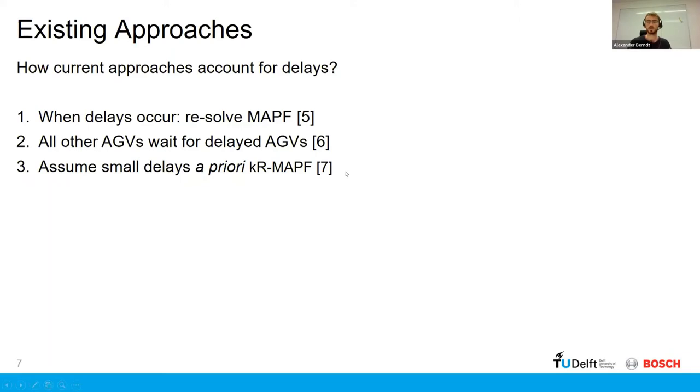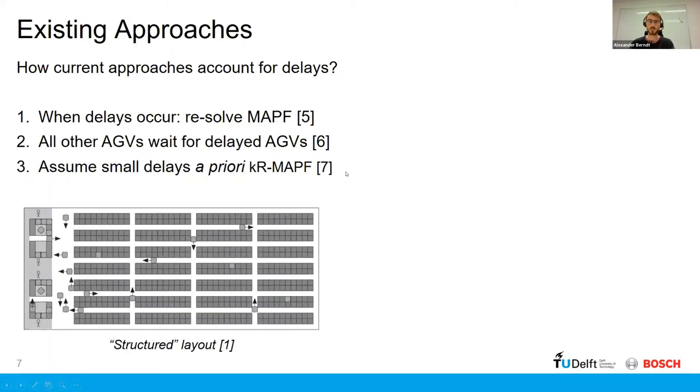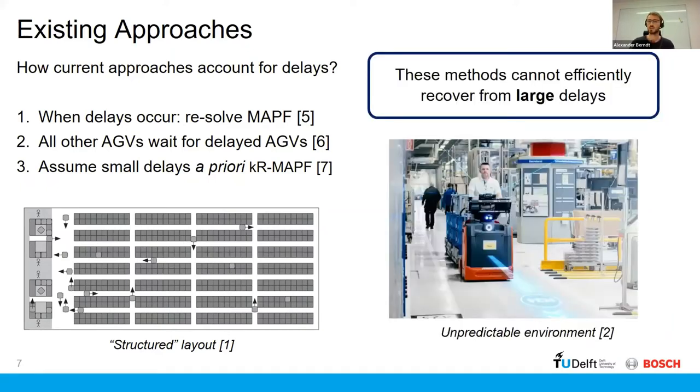And then another approach is this robust multi-agent pathfinding solutions, where we assume a small delay a priori on the execution of each AGV. Now, these solutions are quite applicable to more structured layout, but now what happens if your layout or your environment that you're working in is a lot more unpredictable? So these approaches would not be very good in terms of large delays.